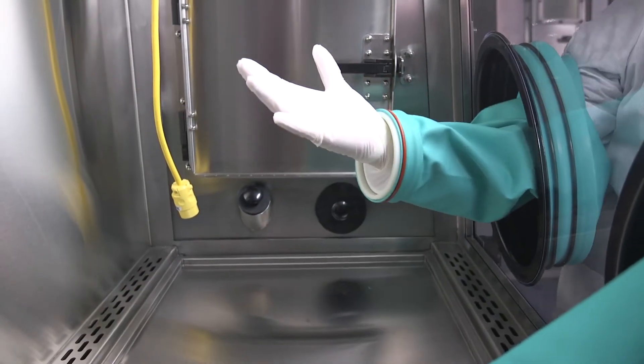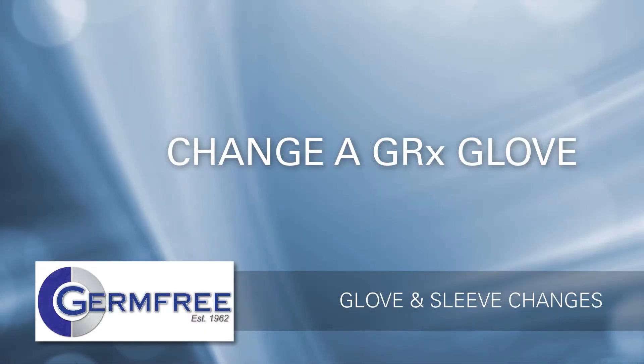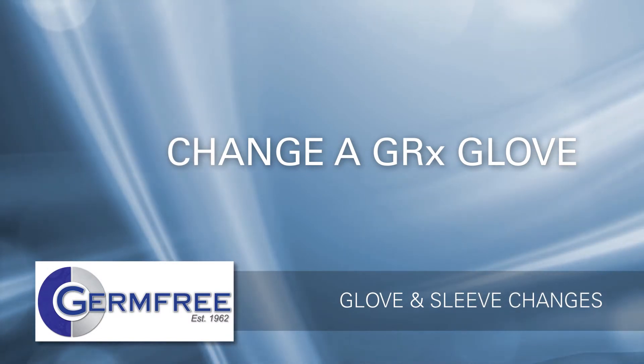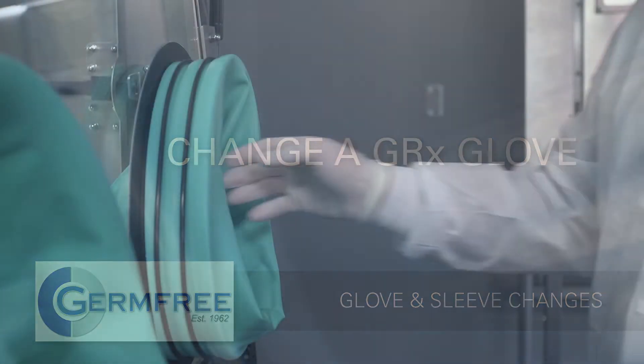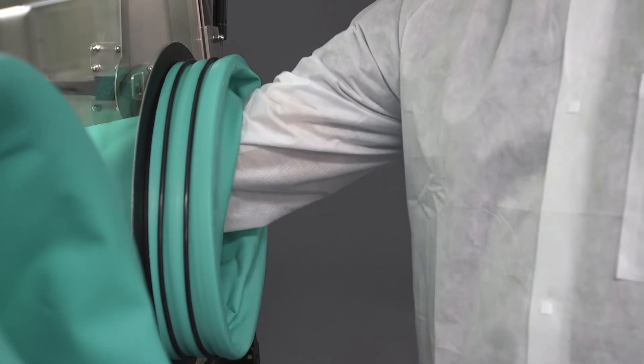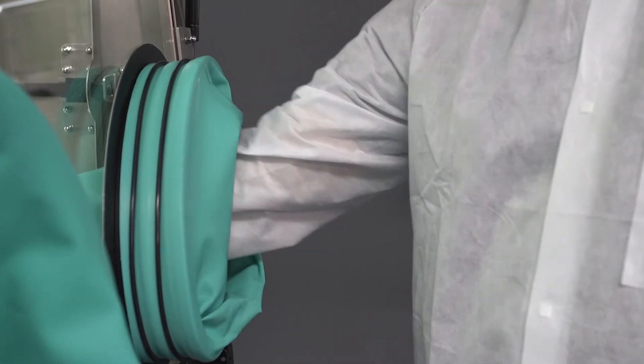The last topic this video covers is how to change a GRX glove. To change a glove using the GRX system, begin by pulling the sleeve out. This will expose both the beta and alpha rings.